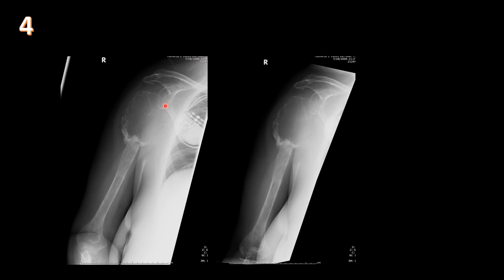Fourth case: AP and lateral views of the right humerus show a large destructive lucent lesion within the proximal humerus with a wide zone of transition at the mid-humeral diaphysis, cortical breakthrough, and extension into the soft tissues. In an adult, every aggressive lytic lesion requires two main differential diagnoses: myeloma versus lytic metastasis. This was the only lesion in this patient, so it was a plasmacytoma.